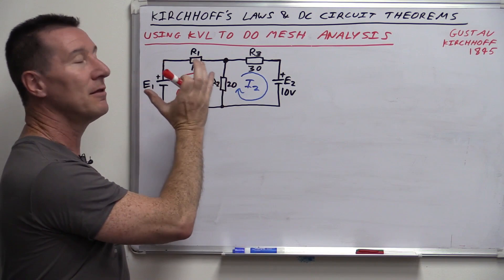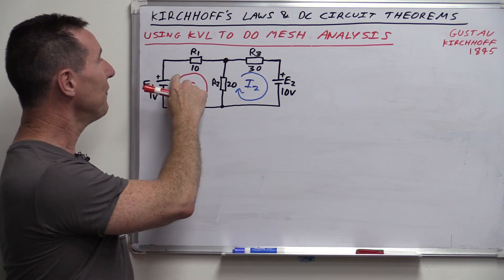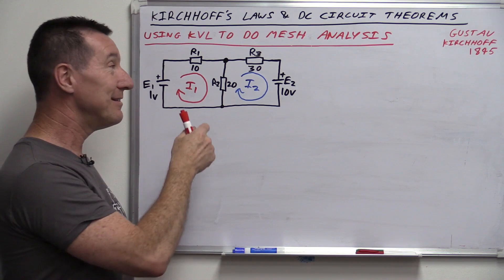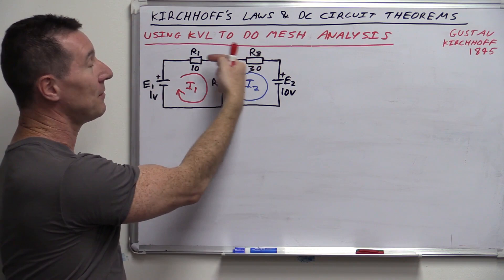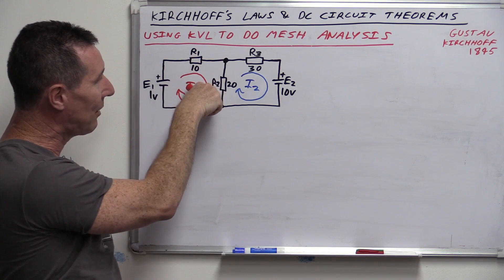Kirchhoff's current law, Kirchhoff's voltage law — they hold. We got the same answer using two different techniques: nodal analysis and mesh analysis, both giving exactly the same current through R2. Now there's actually a third method we can use. It doesn't use Kirchhoff's voltage or current laws directly, but it is one of the basic DC circuit-solving theorems. It's called the superposition theorem.